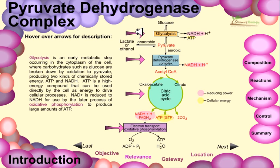Glycolysis is an early metabolic step occurring in the cytoplasm of the cell, where carbohydrates such as glucose are broken down by oxidation to pyruvate, producing two kinds of chemically stored energy: ATP and NADH. ATP is a high-energy compound used directly by the cell, while NAD+ is reduced to NADH for use in later oxidative phosphorylation to produce large amounts of ATP.